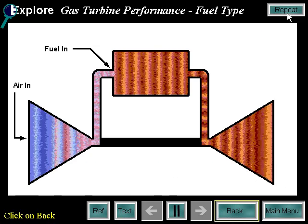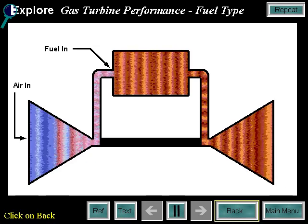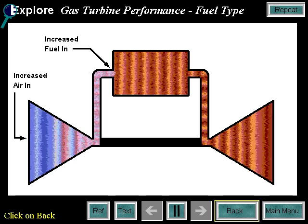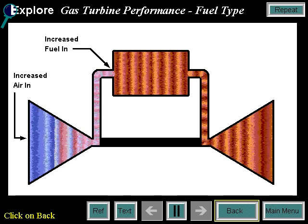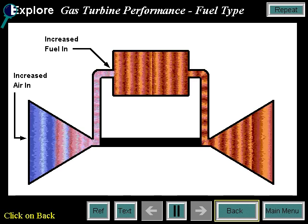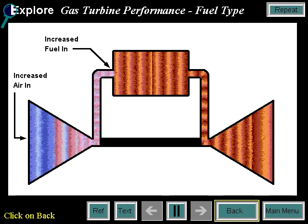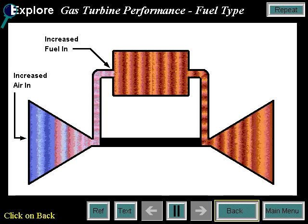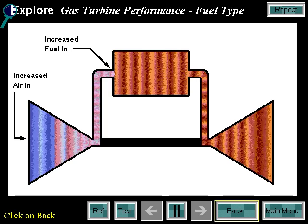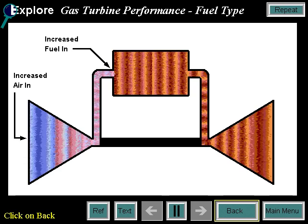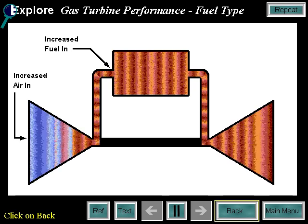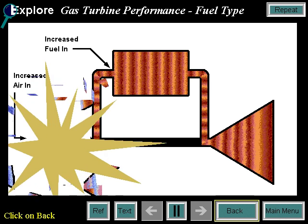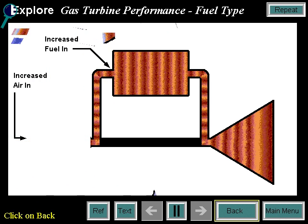When burning lower heating value fuels, turbine mass flow is increased because more fuel and air are required. This drives up the compressor pressure ratio, eventually encroaching on the compressor surge limit. This means that such a large volume of fuel is required to fire the machine that it begins to push back on the compressor discharge pressure, causing a reverse flow to occur in the compressor.